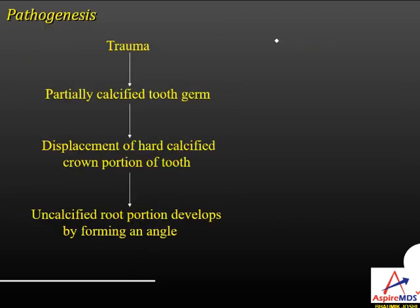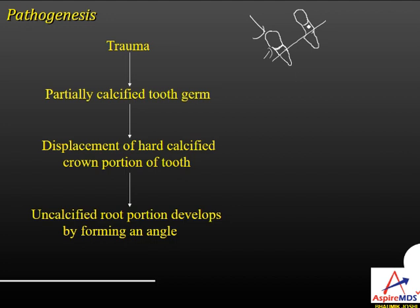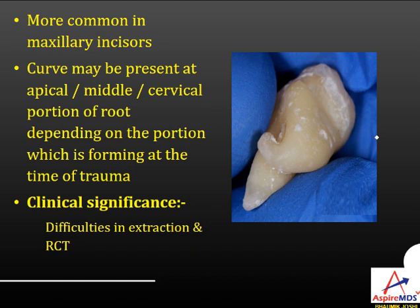In dilaceration, during tooth germ calcification — where crown formation and partial root formation have already taken place — trauma causes displacement of the crown. Root formation continues from the displaced position, producing a sharp bend in the tooth. This uncalcified root portion develops at an angle, leading to dilaceration. It is more common in maxillary incisors. The curve may be present at the apical, middle, or cervical portion of the root. Clinical significance: difficulties arise during extraction or root canal treatment.